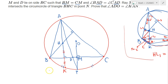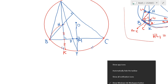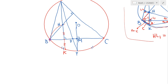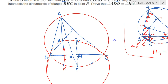Both circles pass through points B and C, and they have the same radius. The only explanation is that the circumcircle of BHC is in fact a reflection of the circumcircle of ABC across side BC. So the circumcircle of BHC is basically the same size as our original circumcircle.